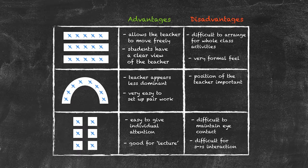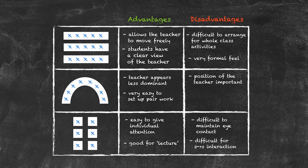So far we've talked about the use of the eyes, the use of voice, and the use of gesture to help manage the classroom. We've also looked at the actual classroom arrangement in terms of the physical space and the material within that classroom, and we've looked at three of the most common types of arrangement in terms of seating.